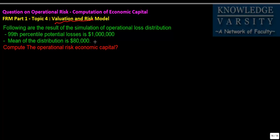What you have done is let's say in a bank they have done a simulation of the operational loss and the 99th percentile loss comes to 1 million dollars. The mean of these losses is 80,000 dollars.